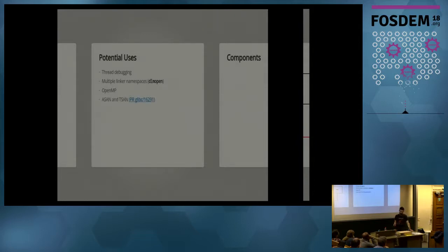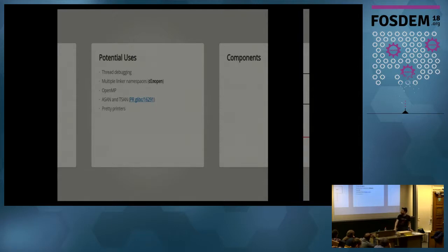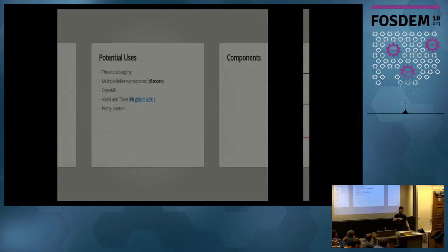ASan and TSan — address sanitizer and thread sanitizer from Clang — currently use hacks to calculate things that are not exported. These kinds of things where a tool bakes in knowledge of the internals of something else is the basic use case for Infinity. The final potential use I've thought of so far is glibc's pretty printers, which are currently written in Python. The Python code has two parts: finding the thing you're trying to print, and actually printing it. The printing part would still stay in Python, but the part of finding it and encoding all the structure offsets is really nicely suited for Infinity.